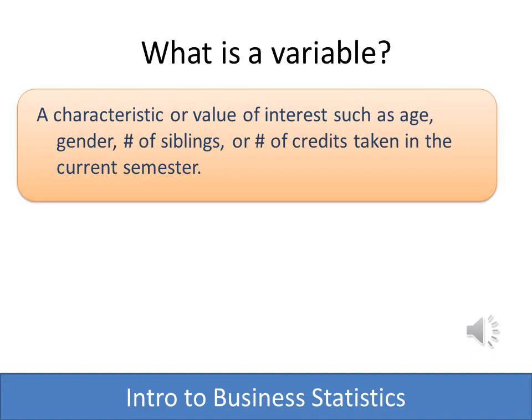A survey is going to have variables, and variables are the characteristics that we're looking for — such as age, number of siblings, or number of credits taken in a class. Those are all variables that we'll be tracking when we survey a sample.